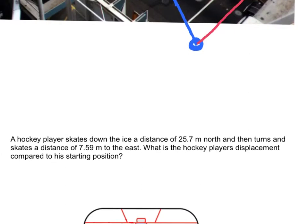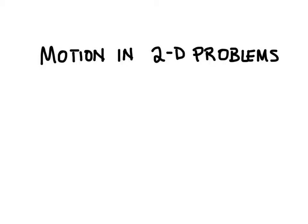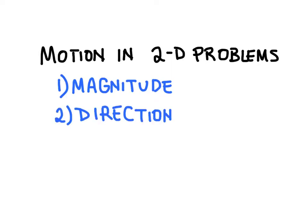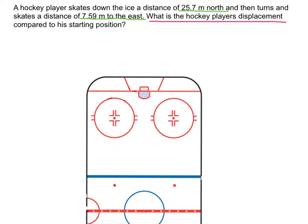Let's try solving a problem that involves displacement in two dimensions. A hockey player skates a distance of 25.7 meters north, then turns and skates a distance of 7.59 meters to the east. What is the hockey player's displacement compared to his starting position? Whenever we're solving a problem involving motion in two dimensions, our answer needs to include two things: the magnitude and the direction of the vector, which we'll indicate with an angle. I've underlined the known information in green and what the question asks for in red.